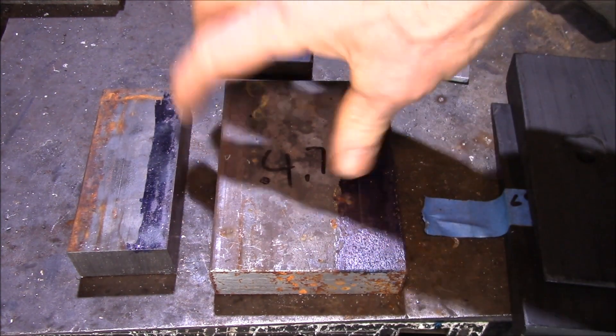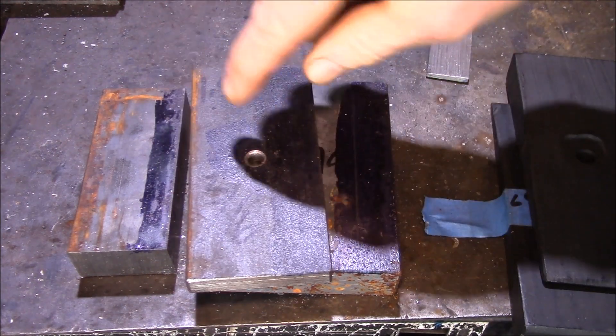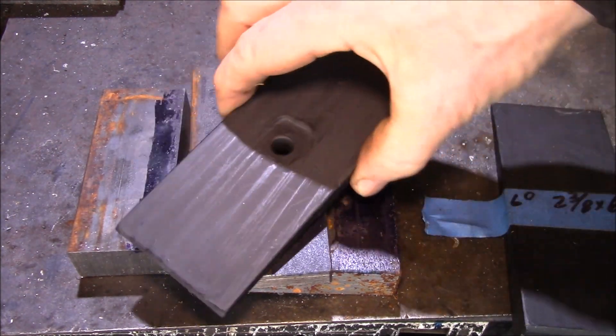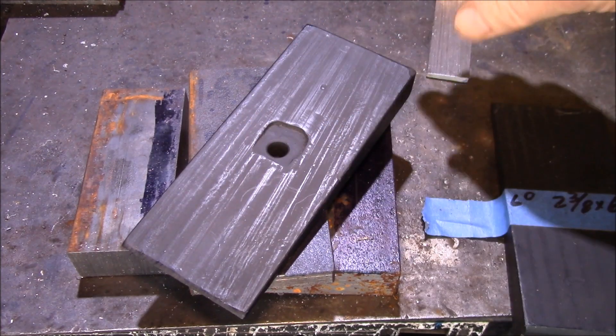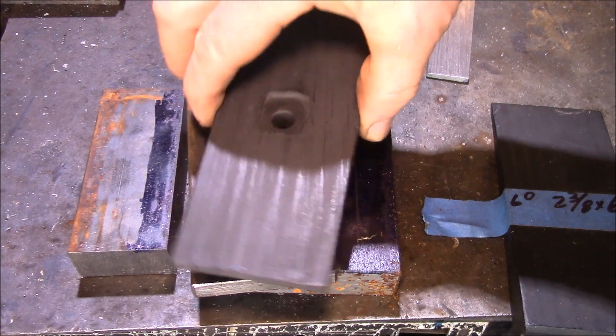We start with a hunk of steel. We cut it to length, cut it to width, mark and drill a center hole. And then we cut the shims out and machine a pocket in there, stamp them with the angle, clean them up, paint them.